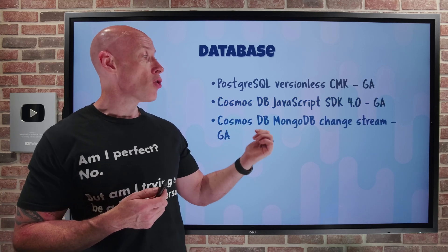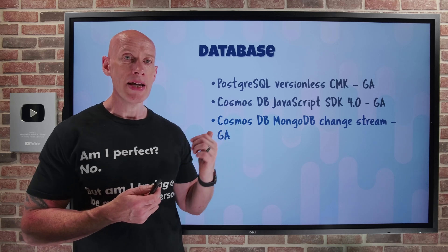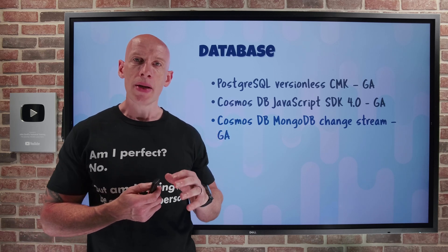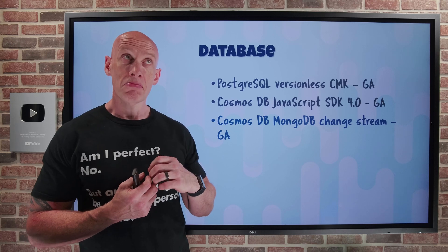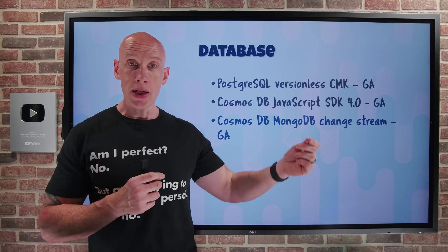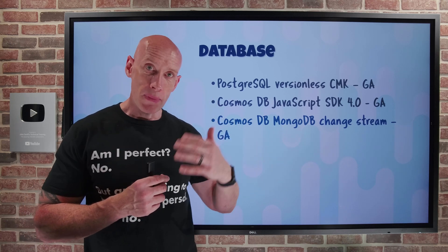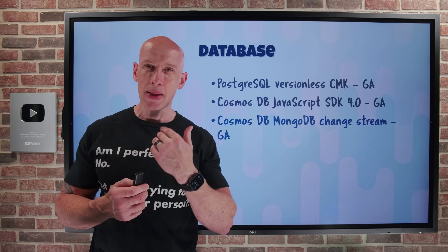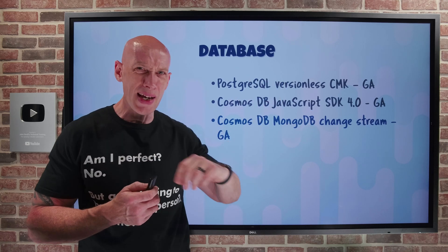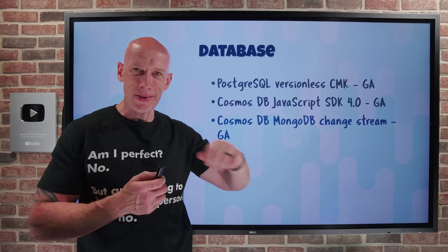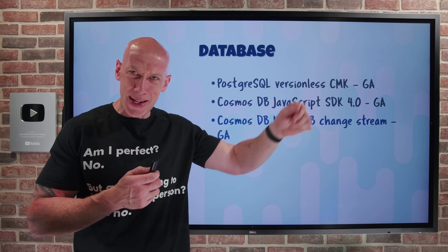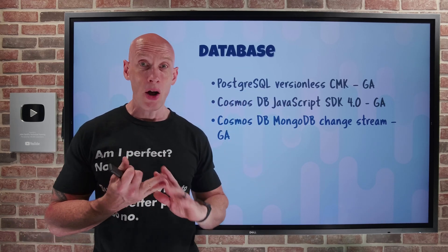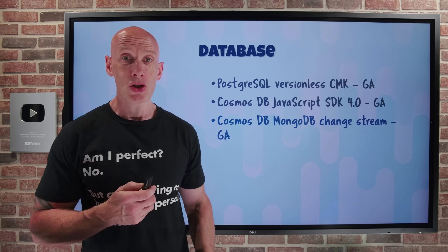Cosmos DB MongoDB vCore now has change stream. The idea is I can subscribe to this change stream and get notified of changes in real time, removing the need for my application to poll for changes. I can enable or disable it using the Azure CLI or ARM templates, with portal support coming soon.